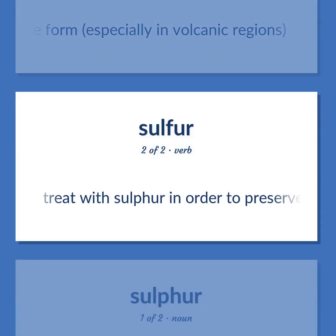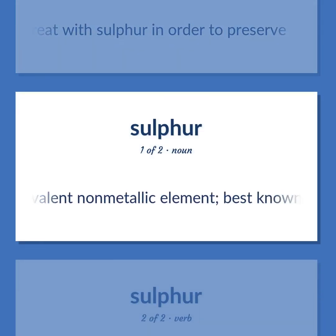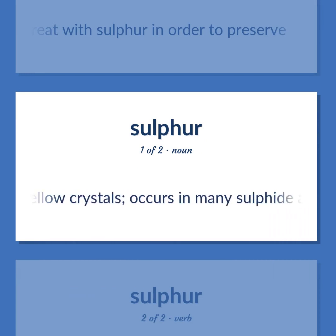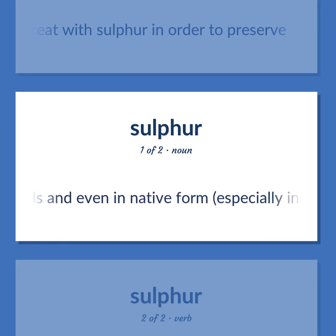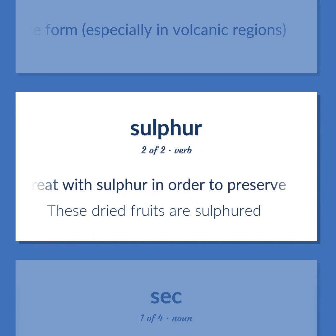Treat with sulfur in order to preserve. Occurs in many sulfide and sulfate minerals and even in native form, especially in volcanic regions. These dried fruits are sulfured.